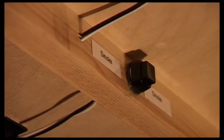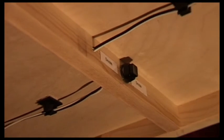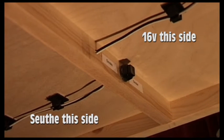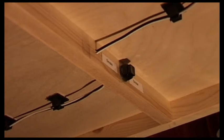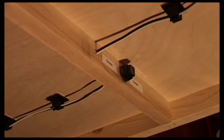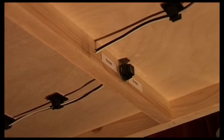So this is the secret switch underneath the layout. The wires on the left are coming from the smoke generator and the wires on the right are going to the 16 volt output on the controller.